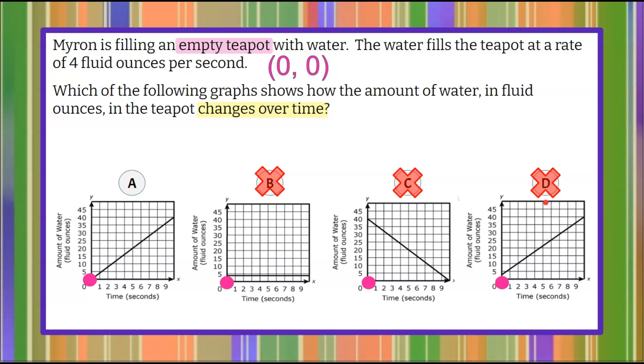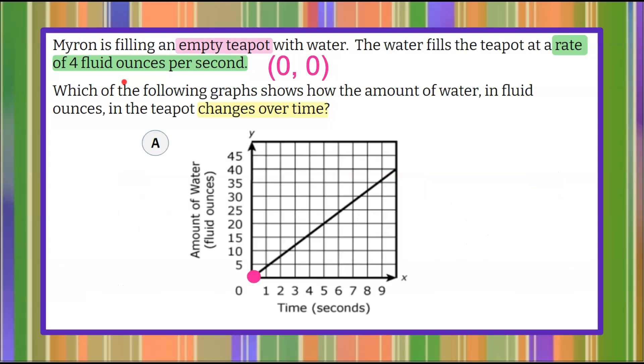So it looks by just looking to see if the initial starting was zero seconds with zero water, it's graph A. Let's enlarge graph A to determine if the rate of four fluid ounces per second follows what the line is showing us.